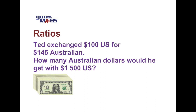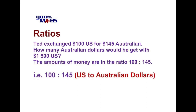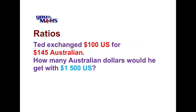There is a ratio that exists here because if we double the amount of US money, we double the amount of Australian money. So the ratio is 100 to 145 — that's US dollars to Australian dollars. Ted wants to work out how we can use that ratio to determine how many Australian dollars he's going to get. We'll first express the ratio we know, which is 100 to 145.